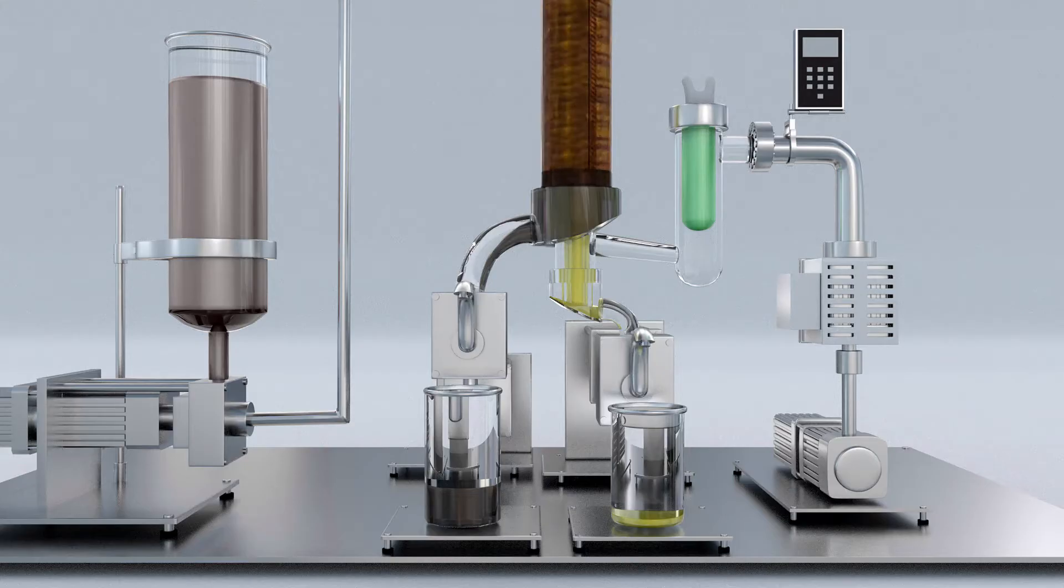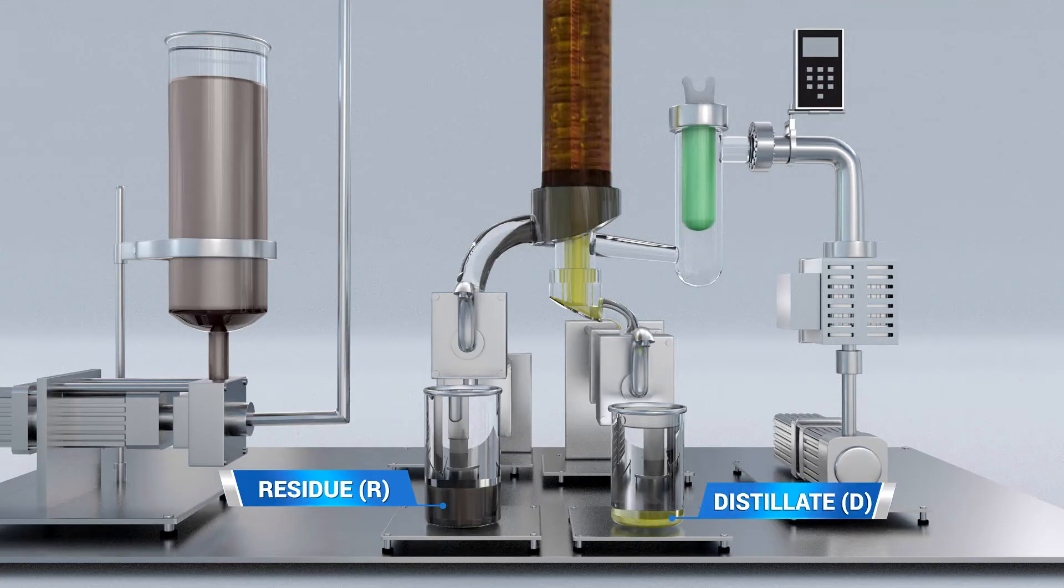Following distillation, the oil is divided into two fractions known as the residue and the distillate phases. The distillate phase contains valuable cannabinoids rich in THC or CBD, while the residue phase contains impurities and other undesirable high molecular weight byproducts.